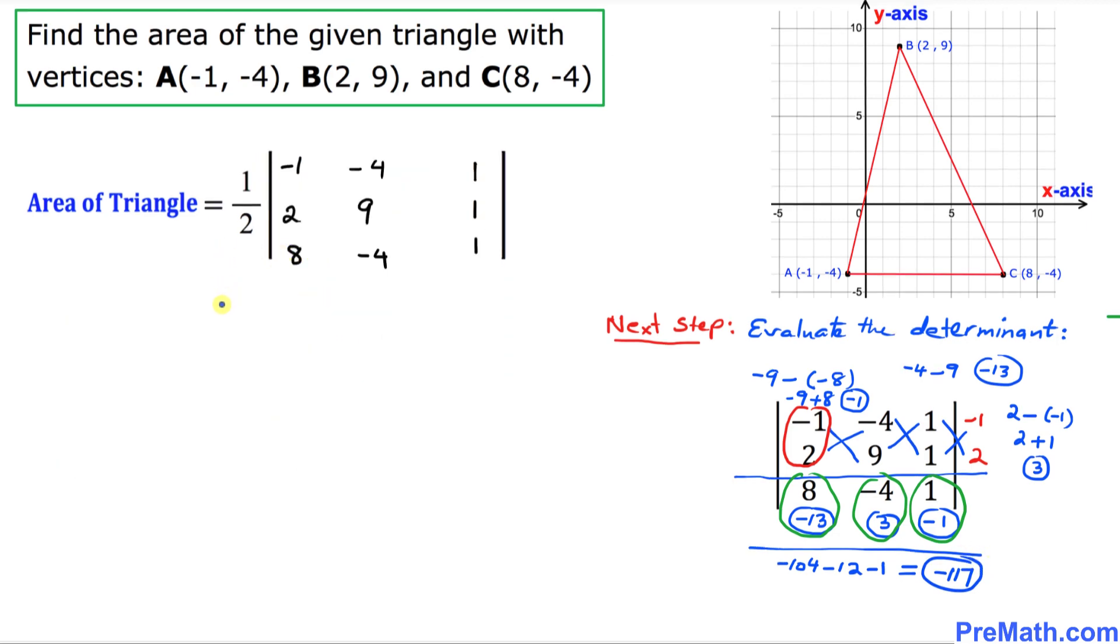And here is our final step. The area of the triangle is going to be 1 over 2 times, we figured out the value of this determinant. This is negative 117. Let's simplify that and that is going to give us negative 58.5.